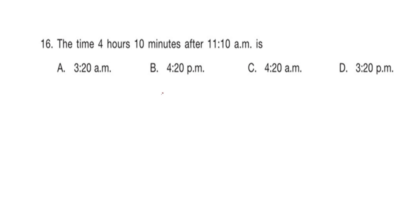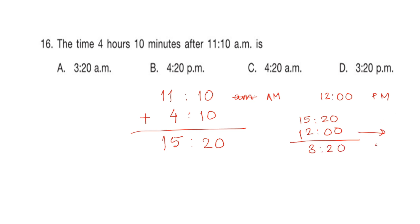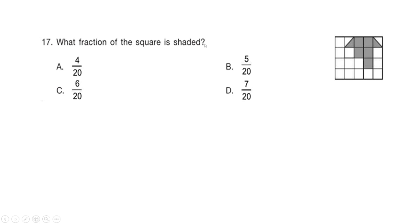Starting from 11:10 AM, we add 4 hours and 10 minutes. 10+10=20 minutes and 11+4=15, giving us 15:20. Since after 12 it becomes PM, we subtract 12 from 15 to get 3:20 PM. So the time is 3:20 PM, which is option D, and that is our right answer.